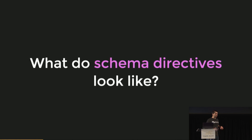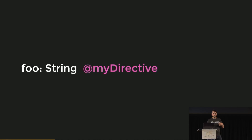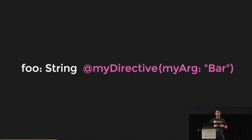Before we get into how you would actually create one, let's take a look at what it looks like. Here we've got just a simple field — it's a type string, the field is foo. If we want to use some kind of directive on it, all we've got to do is add an at-sign followed by the directive name. If our directive takes some arguments, we can just pass in an argument — kind of like a function call.